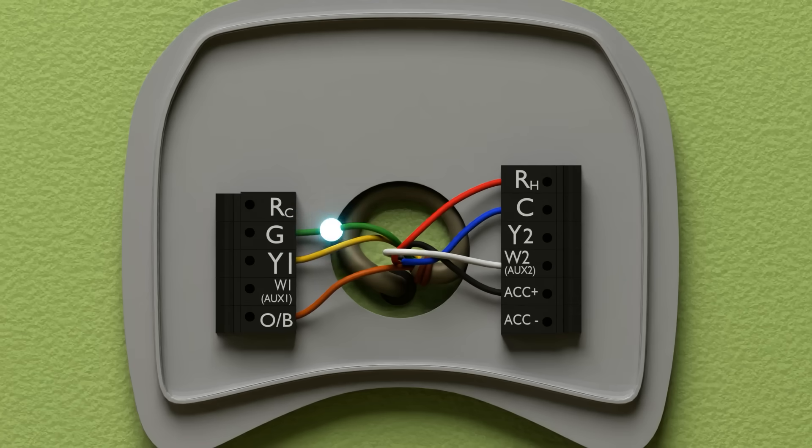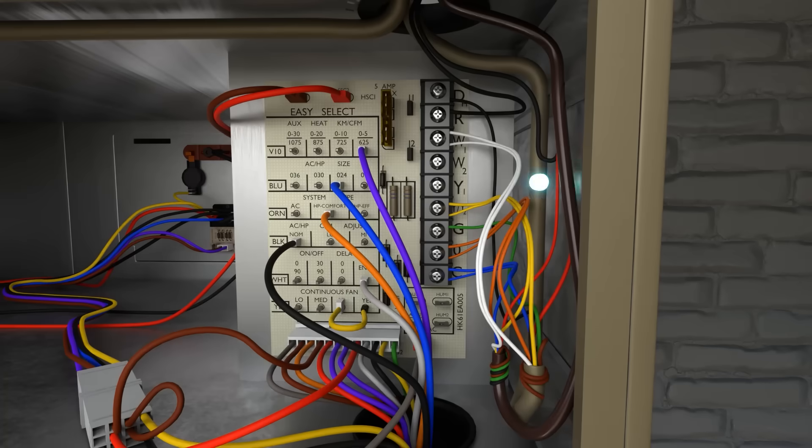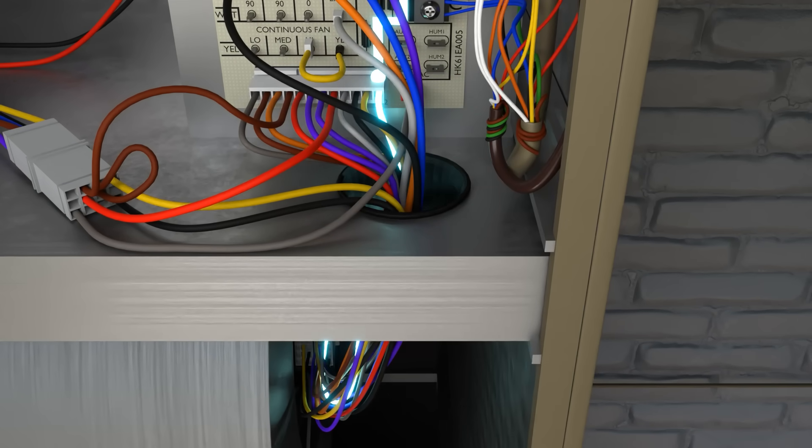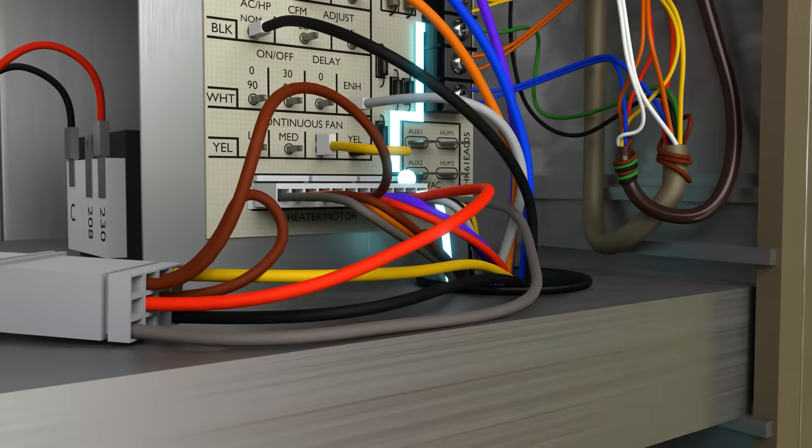Next, we have the G terminal. The G terminal is for a constant 24 volt power applied to our blower. Keep in mind that many variable speed blower motors will not come up to speed unless 24 volts is applied on G during cooling mode. As you can see, this feeds down to the blower motor and brings the blower motor on. This is used especially during the constant fan on setting on the thermostat.